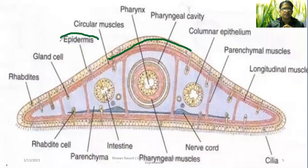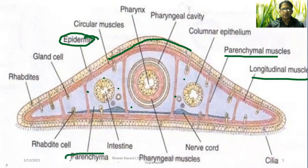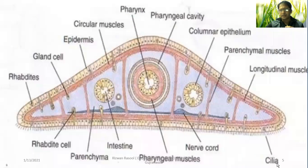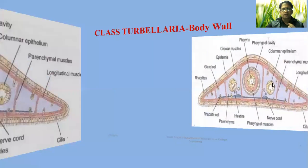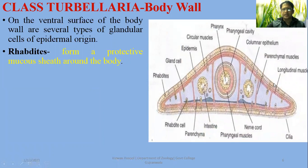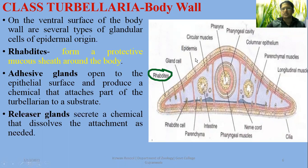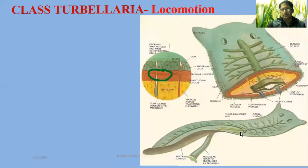In this body wall structure, the outer layer facing outside is the epidermis. The inner space contains parenchyma, along with longitudinal and circular muscles. The intestine or pharynx are located internally, and the pharynx is an associated structure of the gut. In this cross-section, you can see cilia on the lower side associated with the epidermis layer. The body wall features include glandular structures that secrete a protective mucus around the body wall of Turbellarians. Turbellarians also have adhesive glands and release glands for attachment and detachment during movement.